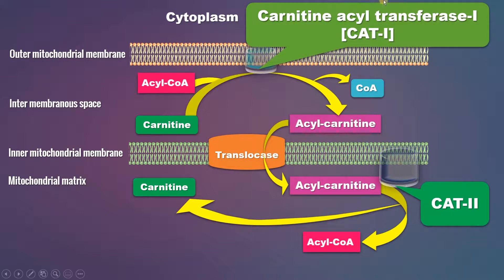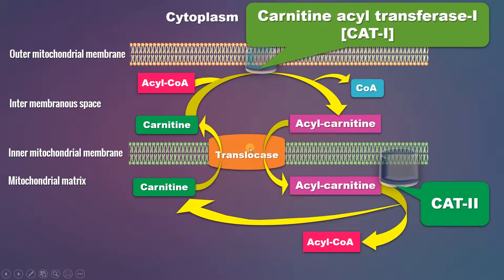Notice that the activated fatty acid originally activated in the cytoplasm — for example palmitoyl-CoA — is now present as acyl-CoA in the mitochondrial matrix. The carnitine that is released here is transported back to the intermembranous space via the same translocase, so that it can combine with another acyl-CoA molecule. This shuttle pathway continues until a sufficient amount of fatty acids are oxidized.